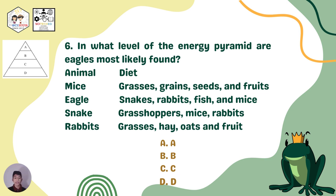Number six: Look at the energy pyramid illustration with letter A on top and letter D on the lowest level. In what level of the energy pyramid are eagles most likely found? We have a set of animals and their diets — mice eat grasses, grains, seeds, and fruits; eagles eat snakes, rabbits, fish, and mice; snakes eat grasshoppers, mice, and rabbits; and rabbits eat grasses, hay, oats, and fruit. Is it level A, B, C, or D? Question seven uses the same pyramid: In what level are mice most likely found — A, B, C, or D?